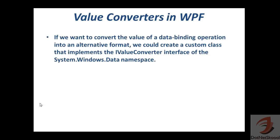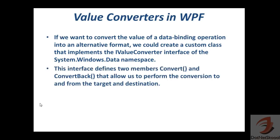If we want to convert the value of a data binding operation into an alternative format, we can create a custom class that implements the IValueConverter interface from the System.Windows.Data namespace. This interface defines two members — Convert and ConvertBack — that allow us to perform conversion to and from the target and destination.